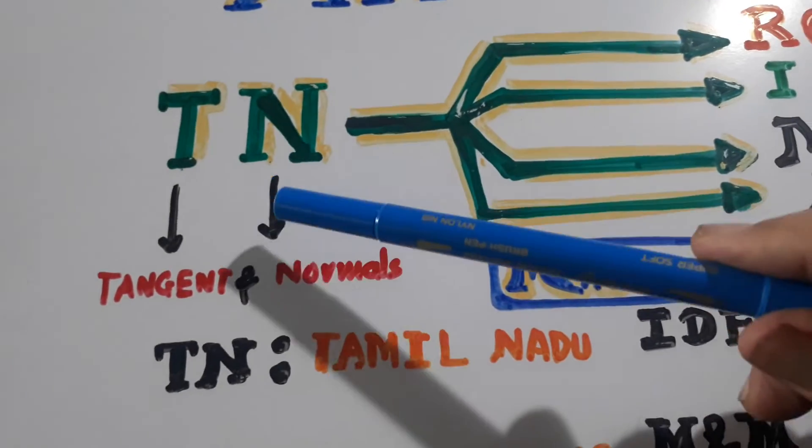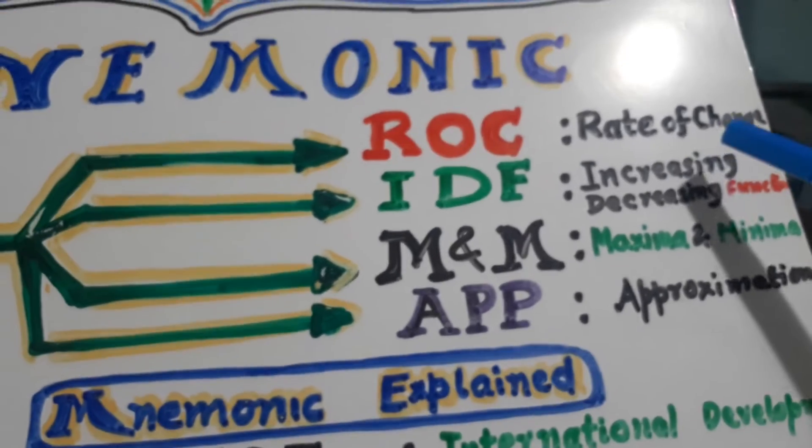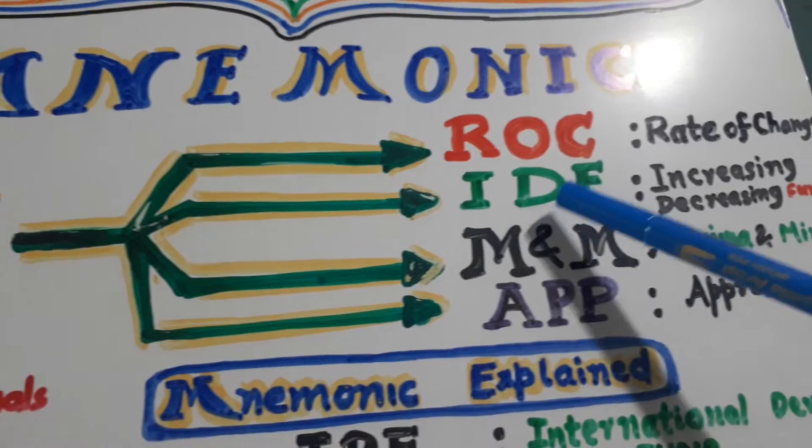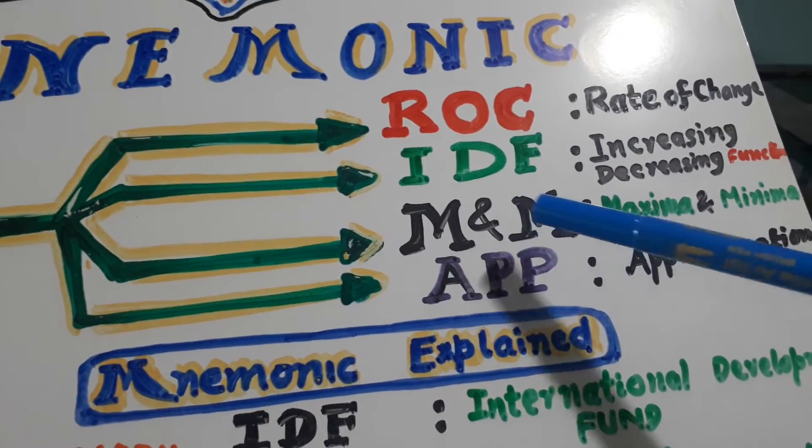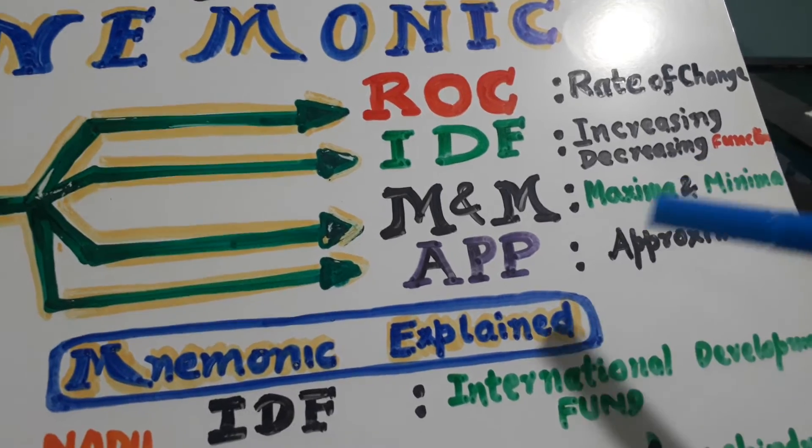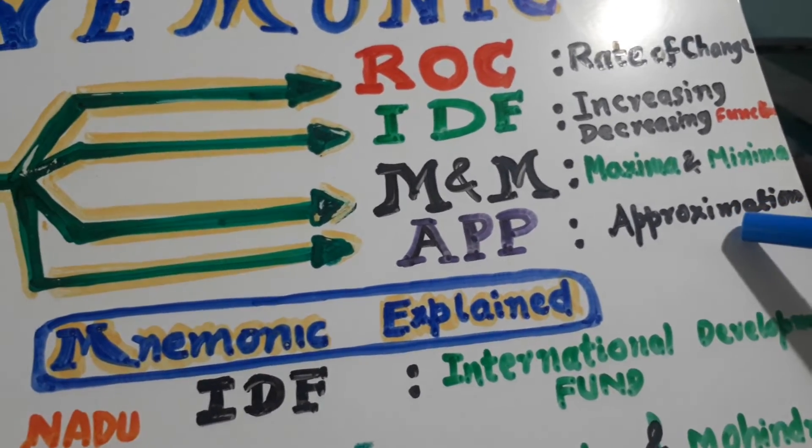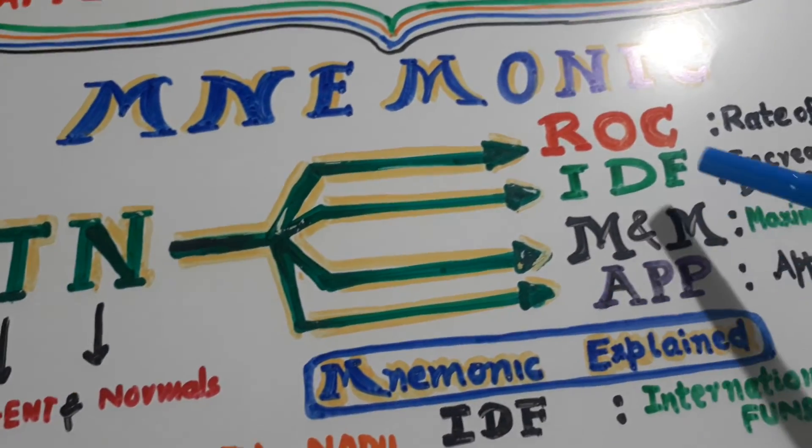So T.N. stands for Tangents and Normals. ROC stands for Rate of Change. IDF - Increasing, Decreasing Functions. M and M - Maxima and Minima. AP stands for Approximation. These are the five applications of derivatives.